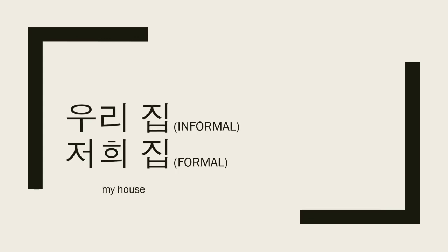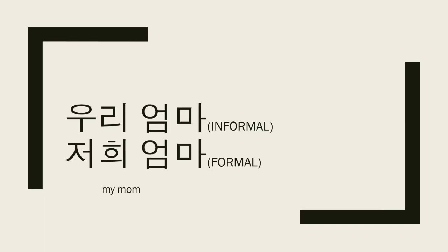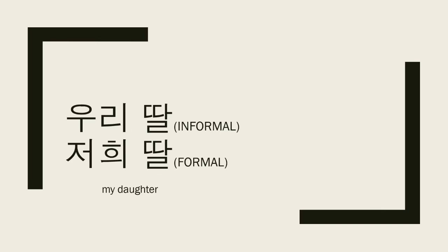우리 집 or 저희 집 means 'my house.' The house belongs to a family, not just you — other family members live there too. So you say 우리 집. 우리 엄마 or 저희 엄마 — mom belongs to a family, so you say 우리 instead of 내. And 우리 딸 or 저희 딸 — 딸 (daughter) belongs to a family too, so you say 우리 딸 or 저희 딸, meaning 'my daughter.'